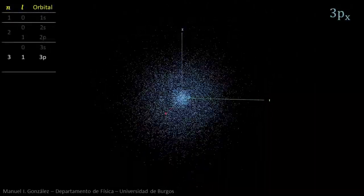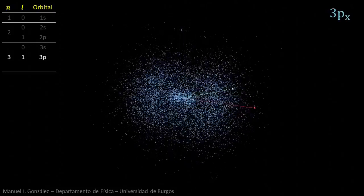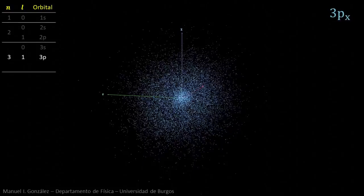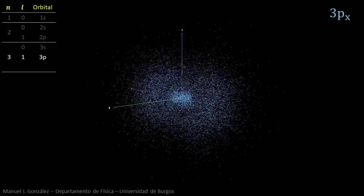Just as 2p orbitals, 3p ones have dumbbell shape, but with a radial node splitting each lobe. This is 3px.